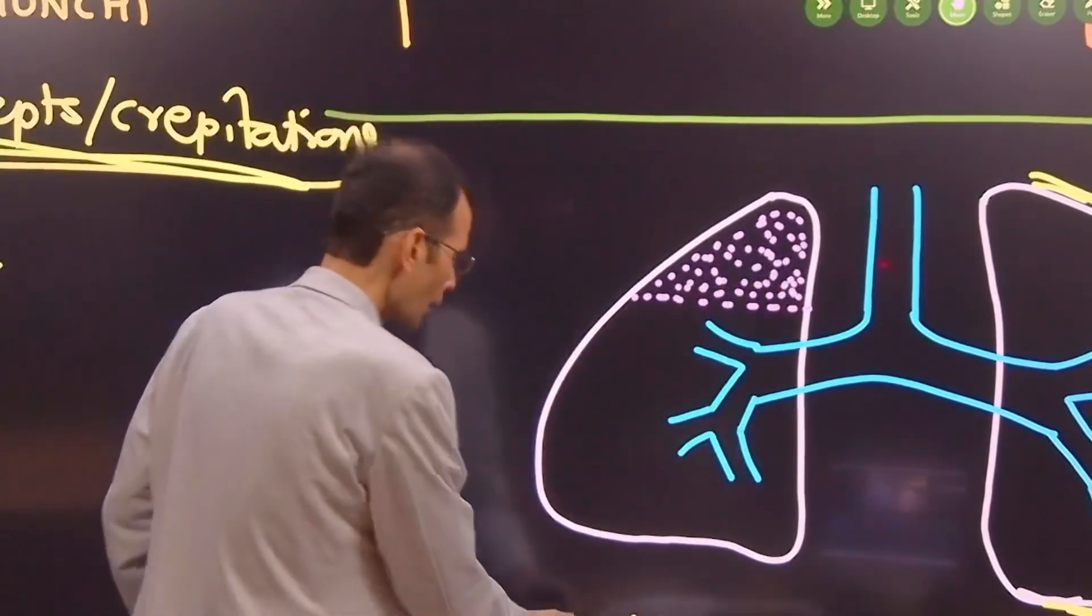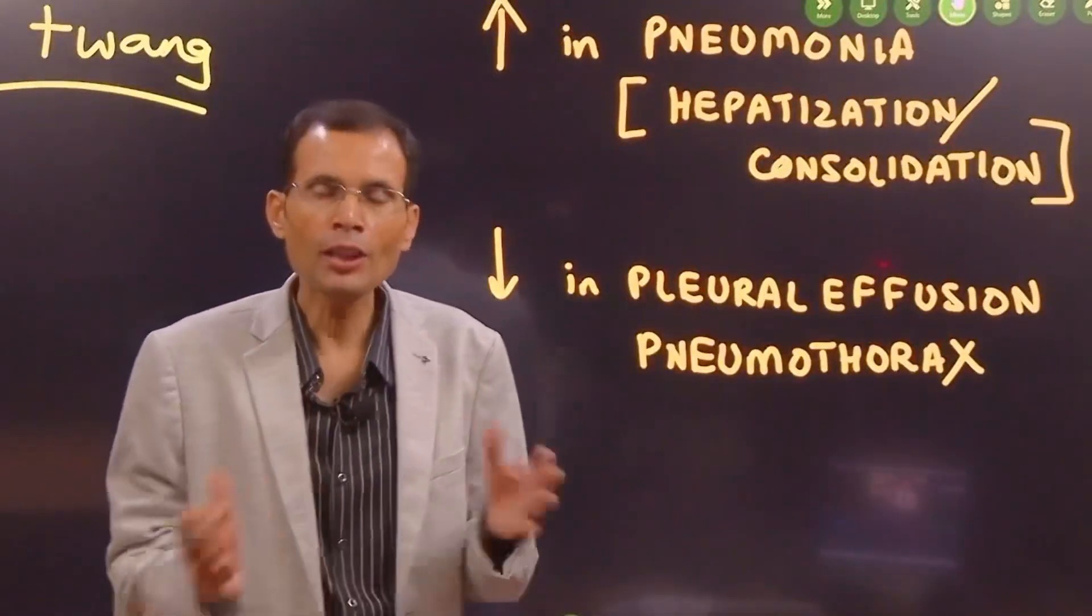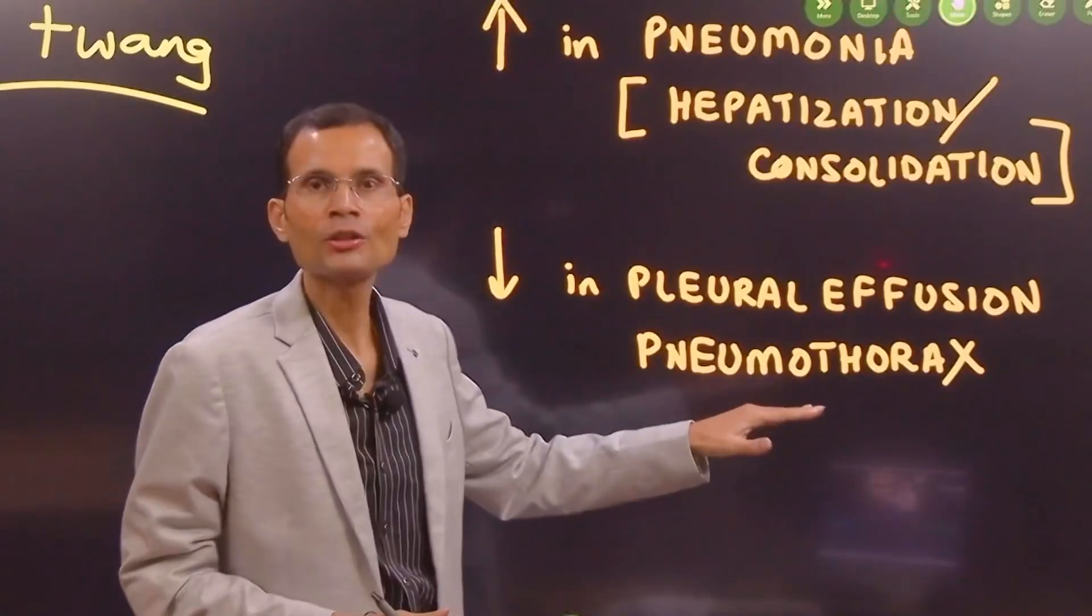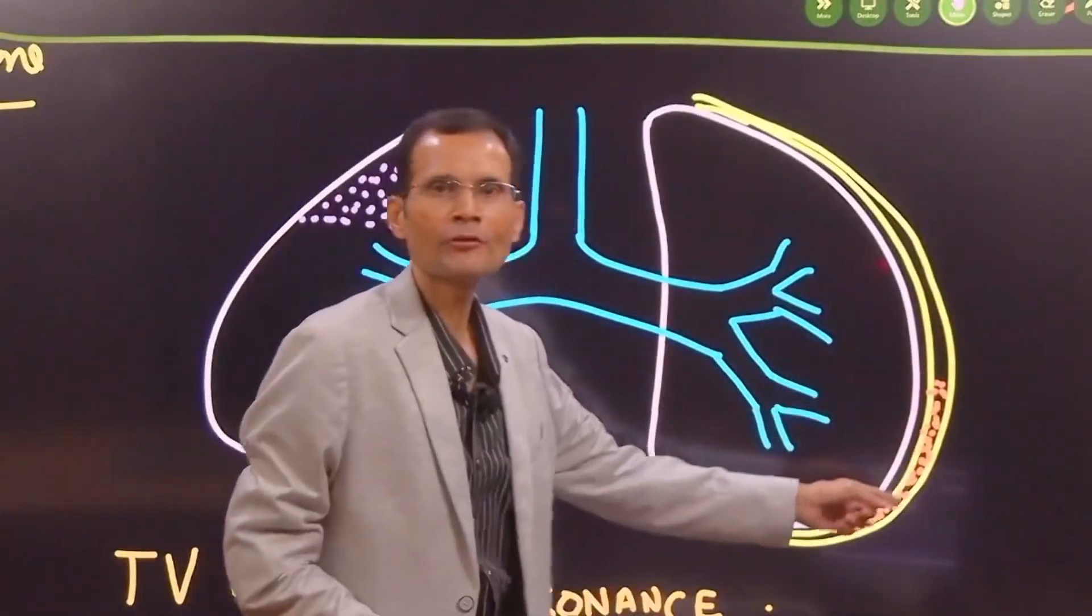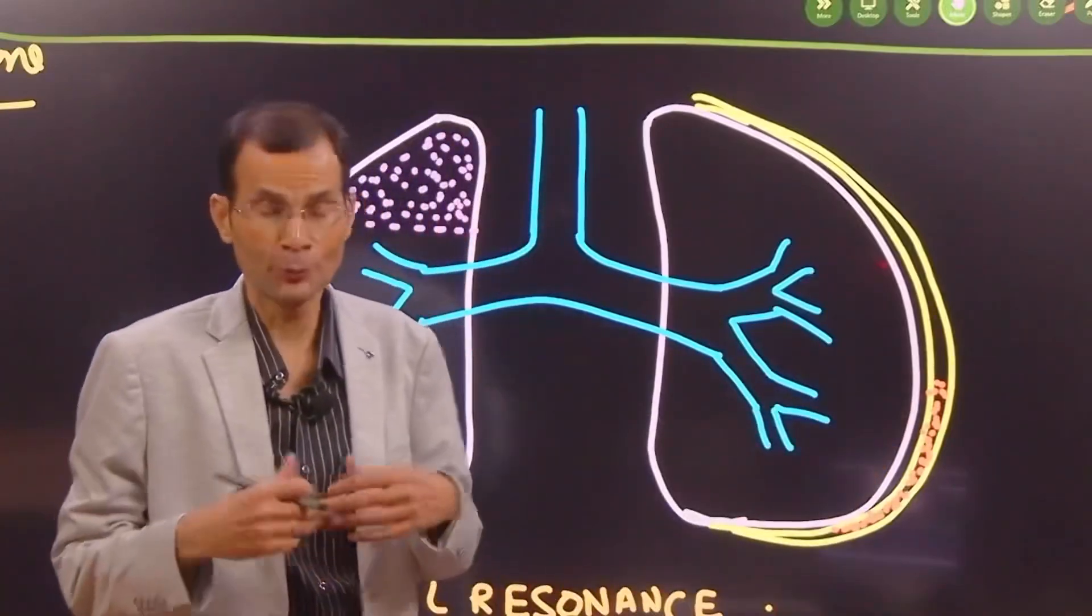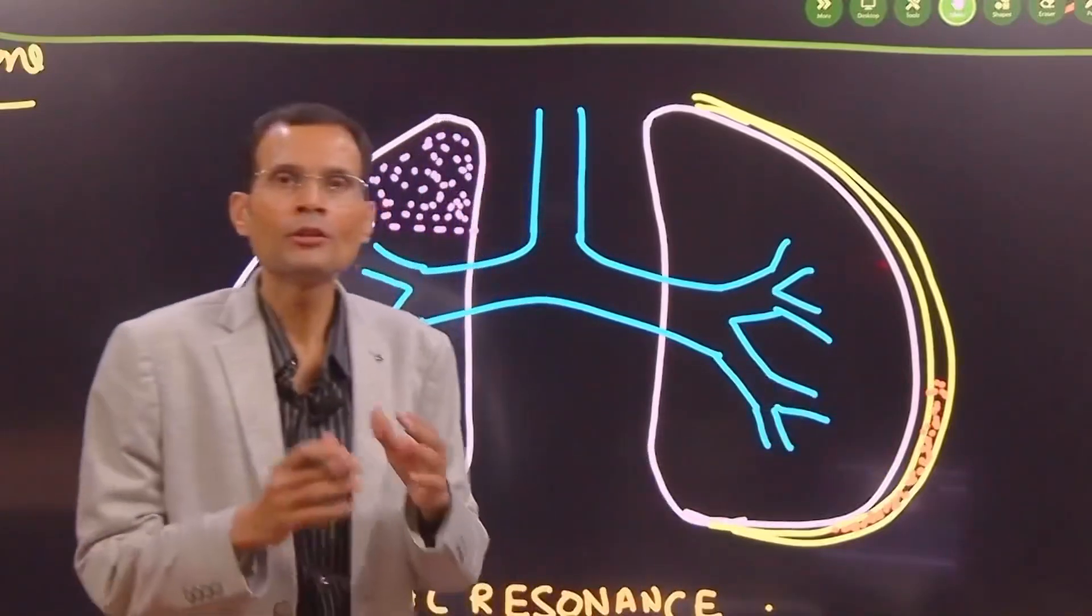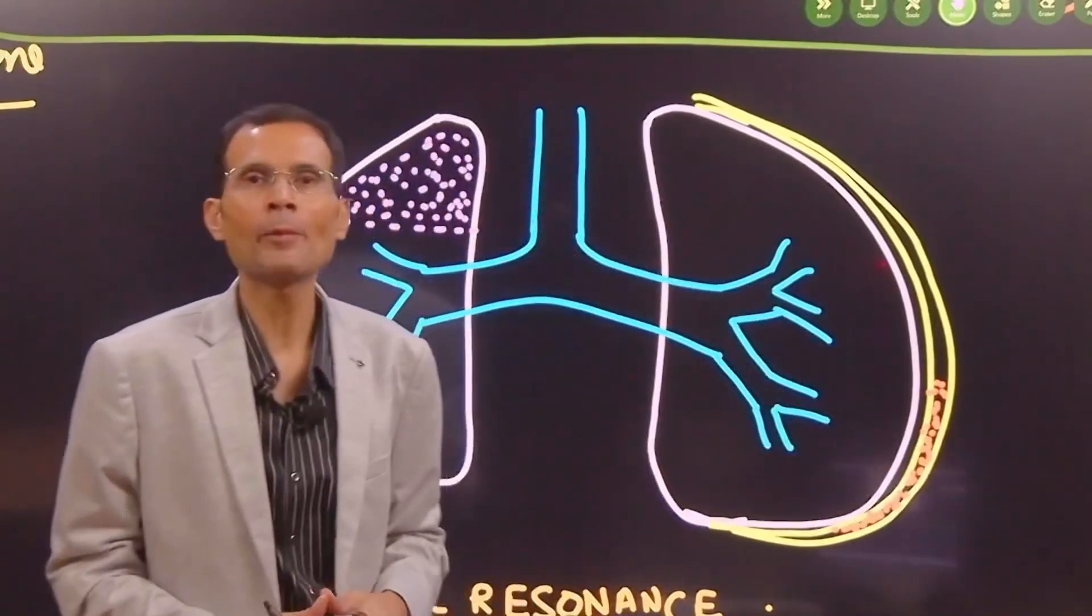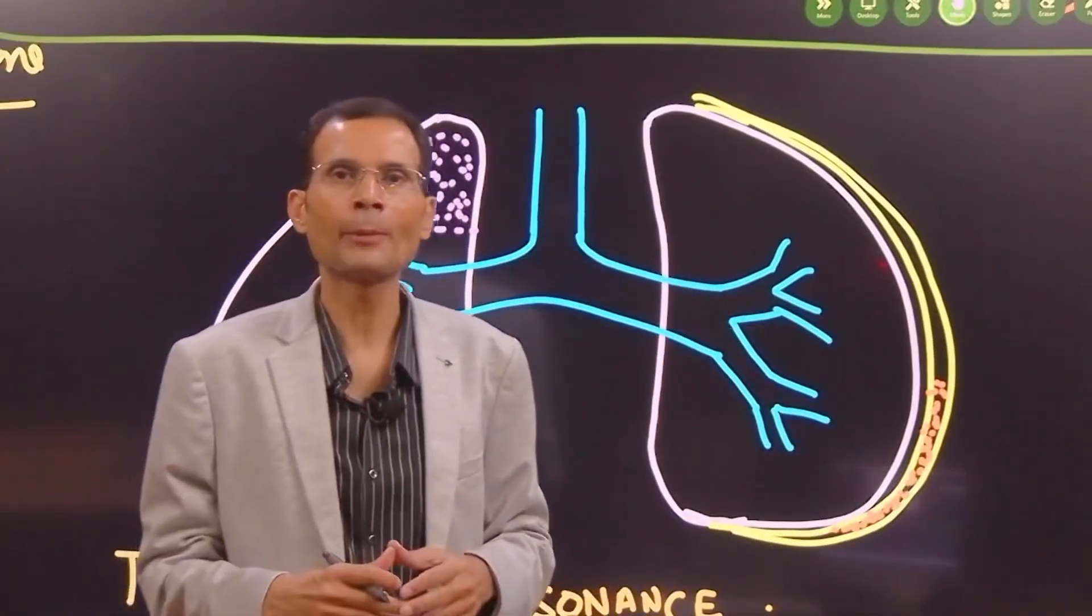Let's just complete this further. The vocal resonance is decreased in the conditions like pleural effusion or pneumothorax. Why? Because in these conditions like pleural effusion or pneumothorax, when the fluid accumulates in the pleural space or air accumulates in the pleural space, the underlying tissue is relaxed and it fails to transmit those vibrations properly. And therefore you get a reduced tactile vocal fremitus on the side which is having pleural effusion or pneumothorax.